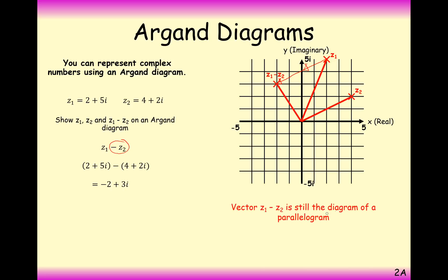So you can still think of these as vectors when there's a plus in there or when there's a negative in there. The vector z1 minus z2 is still a diagram of a parallelogram. So we've got this parallelogram here. If you want to go backwards along z2, you've just got to take away z2 as a complex number.